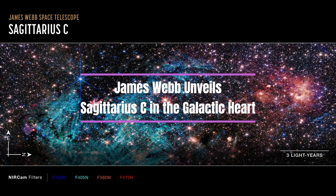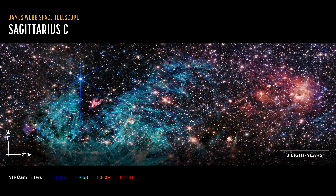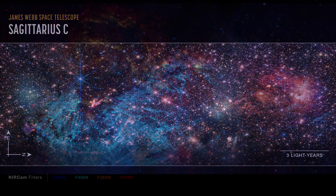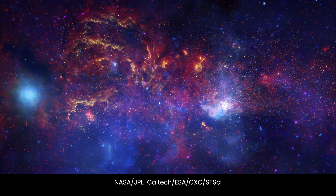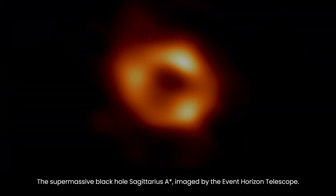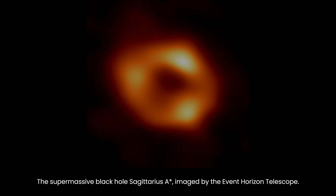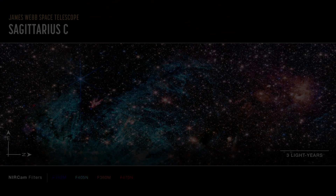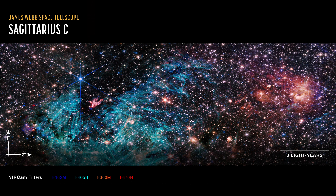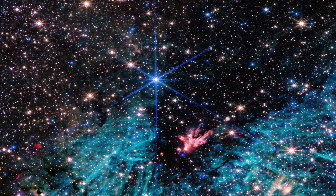The latest image from NASA's James Webb Space Telescope reveals a detailed view of the dense center of our galaxy, showcasing the star-forming region Sagittarius C, located about 300 light-years from the Milky Way's central supermassive black hole Sagittarius A star. The image, captured by the near-infrared camera instrument, exhibits unprecedented resolution and sensitivity.